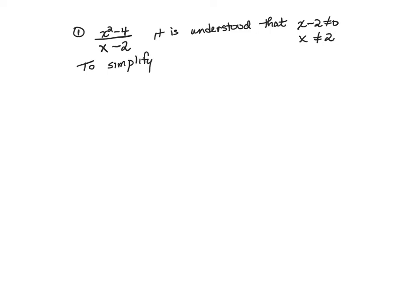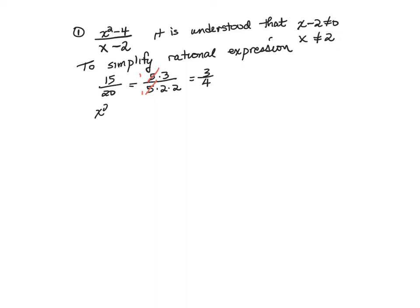To simplify this rational expression, recall that when you want to simplify any fraction, say 15 over 20, we think of 15 as five times three and 20 as five times two times two. We can divide through the common factor of five over five, which is a ratio of one, giving us three over four in simplest form. That's exactly what we do with rational expressions — we completely factor the numerator and the denominator.